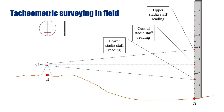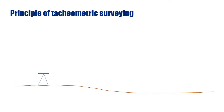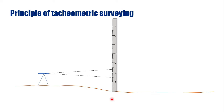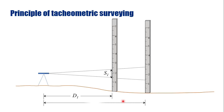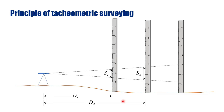Now let's discuss how these staff readings can be utilized to determine horizontal and vertical distances. The determination of distances is based on the principle of tachymetric surveying. For example, the instrument is placed at a station and the staff is held initially at distance d1, giving staff intercept S1. If the staff is moved farther to d2, the staff intercept increases to S2, and at d3, the staff intercept is S3.